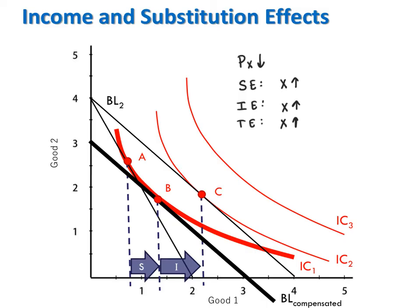Once again, when x is a normal good, both the substitution and income effects show an inverse relationship between price and quantity demanded. For that reason, all normal goods follow the law of demand, because when the price of x goes down, the quantity demanded necessarily goes up in the total effect.